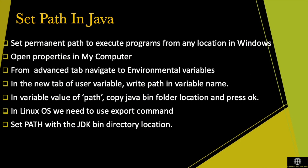To run a Java program from any directory, we need to set the path variable. For Windows, open Properties in My Computer. Then from the Advanced tab, navigate to Environment Variables. In the new tab of User Variables, write 'path' in the variable name. Then in the variable value of path, copy the Java bin folder location and press OK. In Linux operating system, we need to use the export command and then set the path with the JDK bin directory location.